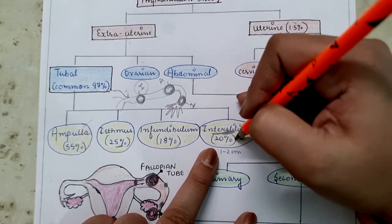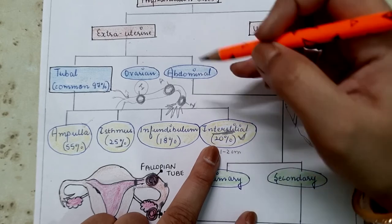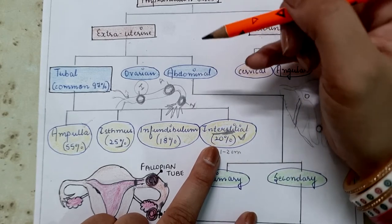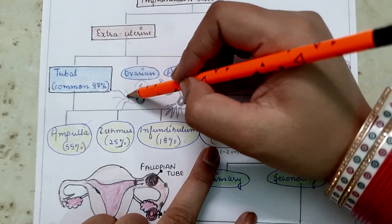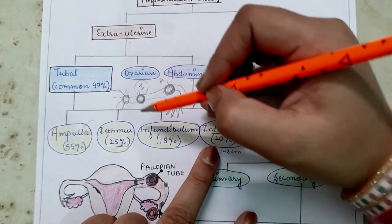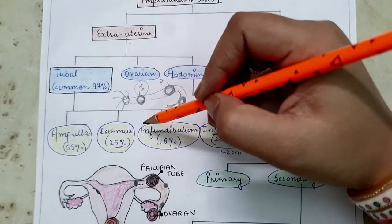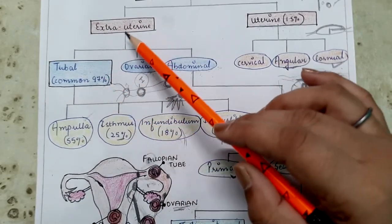In 55% of cases the fertilized ovum implants at the ampulla inside the fallopian tubes, while in 20% of cases implantation occurs at the interstitial site.